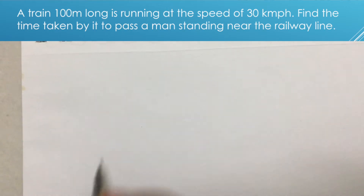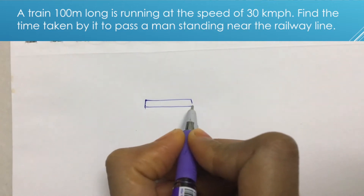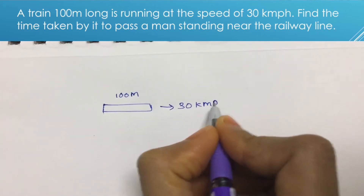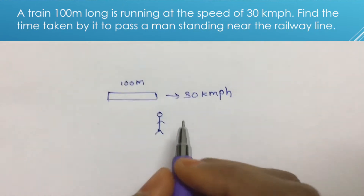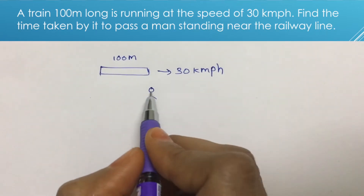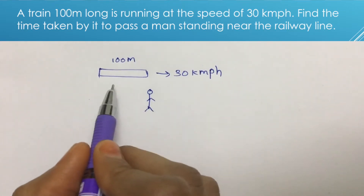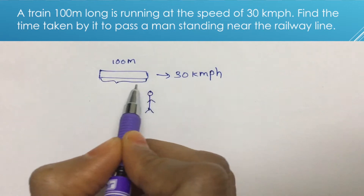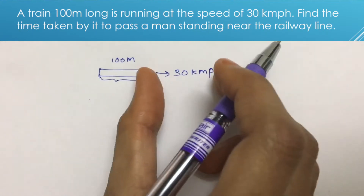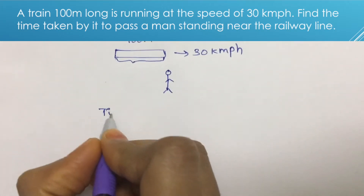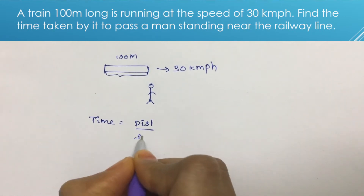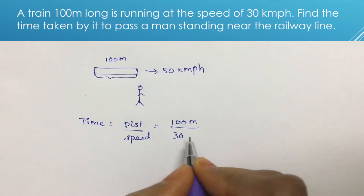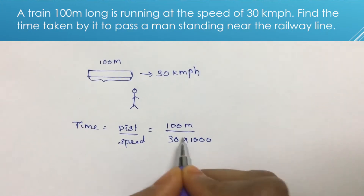In this problem, the length of the train is 100 meters and the speed is 30 km per hour. There is a man standing there — the man is a point. When the man is crossed by the train, the distance traveled equals the length of the train, which is 100 meters. Time equals distance by speed, so distance is 100 meters and speed is 30 km per hour, converting to meters per second.